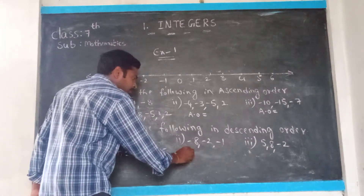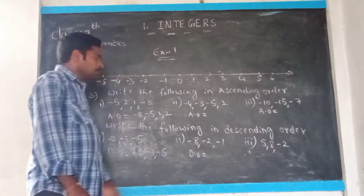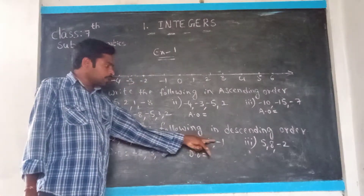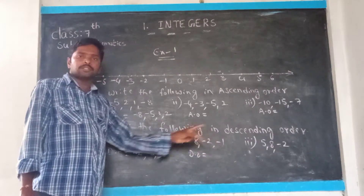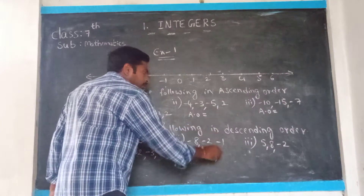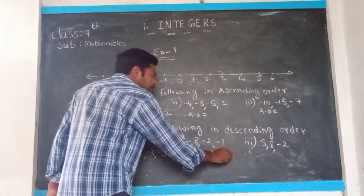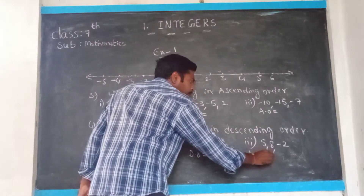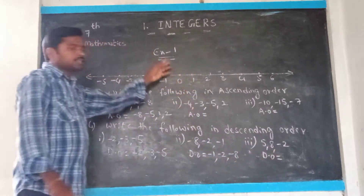Next you go to the second sum. Write again big number to small number. Out of these three numbers — minus 8, minus 2, minus 1 — what is the big number here? Minus 1 is the big one, and minus 2 is the next, and last you write minus 8. Like that, you complete the descending order.